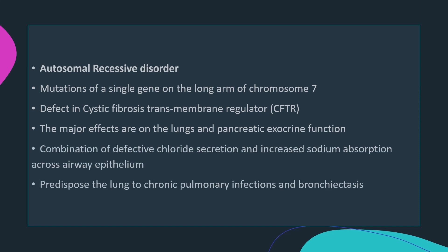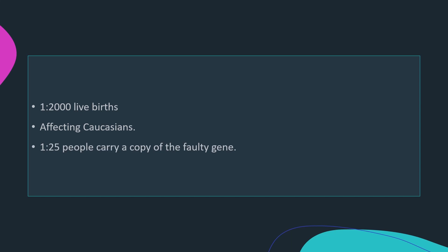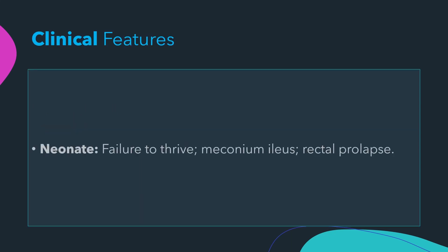The major effects are on the lungs and pancreatic exocrine function, where there are thick tenacious secretions. Changes in the composition of airway surface liquid predispose the lungs to chronic pulmonary infections and bronchiectasis. There are more than 1500 known mutations that reduce chloride channel function. The incidence is 1 in 2000 live births, mostly affecting Caucasians, and 1 in 25 people carry a copy of the faulty gene.